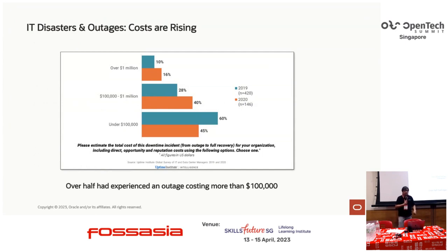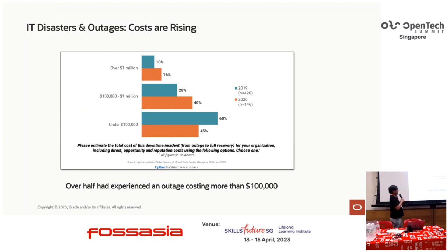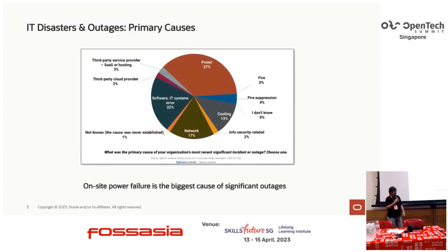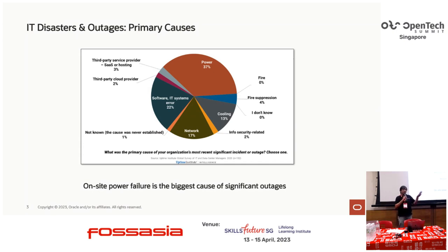This is for disaster recovery solutions. We realized that organizations face a big challenge, especially if there is a major outage on the primary data center, and it can cost them a lot. Based on a survey, more than half say it costs more than $100,000 US dollars. On-site power failures are cited as the biggest cause of significant outages. Power is just one factor, but everything in the data center is nothing without power.